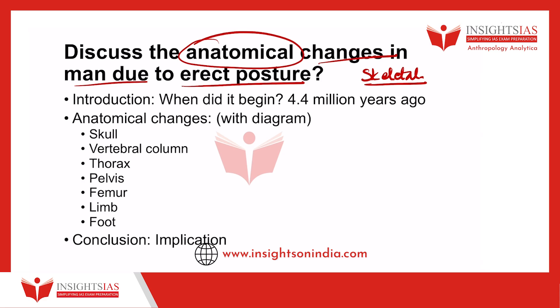This is a very simple question and easy to score. If it is asked as a 20-marker, you can very easily score 15 marks, provided you write your answer this way. First, have a very brief introduction of two to three sentences about erect posture — when it began. As you all know, erect posture appears at about 4.4 million years ago. The Australopithecus was the first to show skeletal features supporting that they were also bipedal. So that can be your introduction.